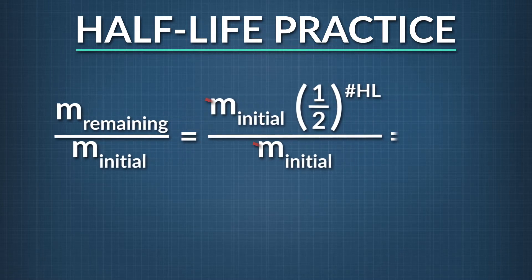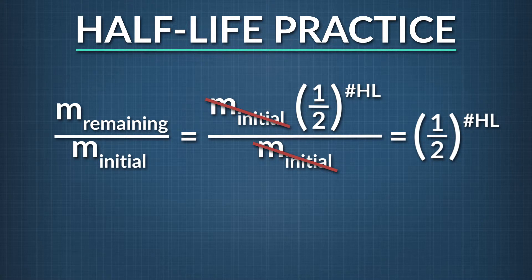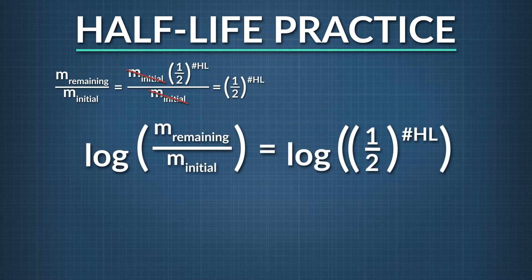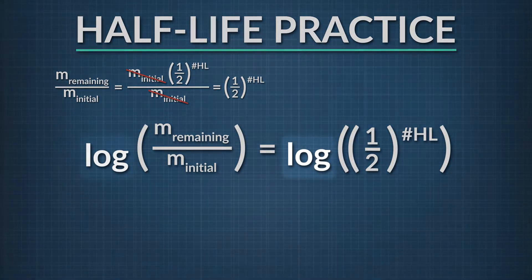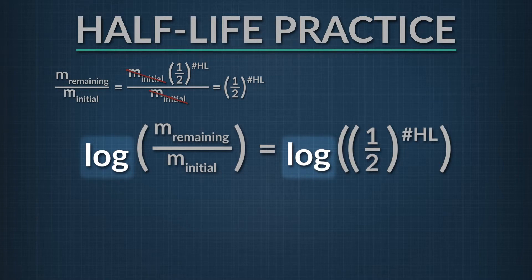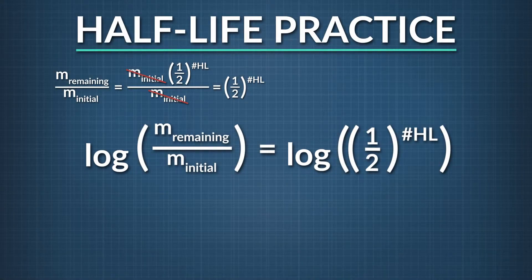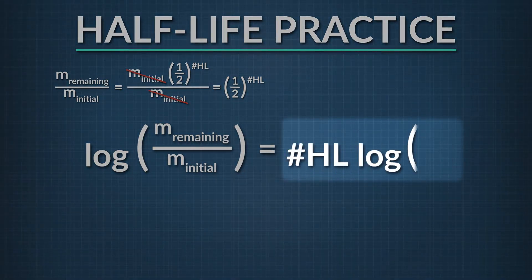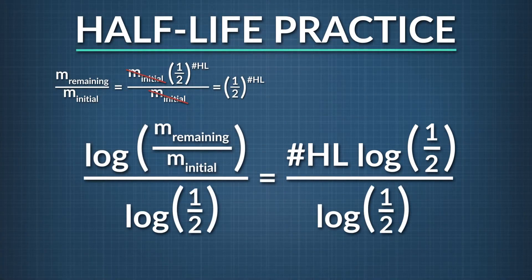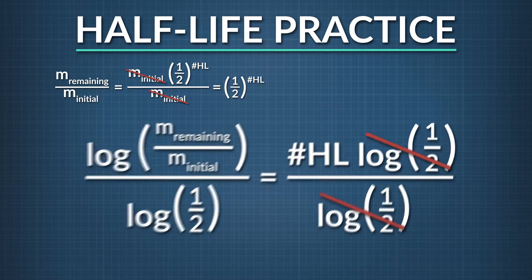Since the number of half-lives is the exponent, we'll need to use a special math function called the logarithm to find it. Mathematically, logarithms and exponents go together. If I take the logarithm, or log, of both sides, by the property of the logarithm, the right side becomes equal to the number of half-lives times the log of one-half. Now I'll divide both sides of the equation by the log of one-half, which leaves us with this equation.